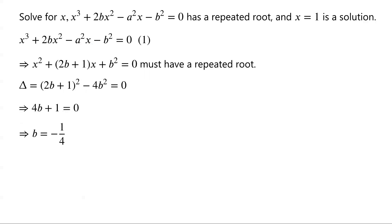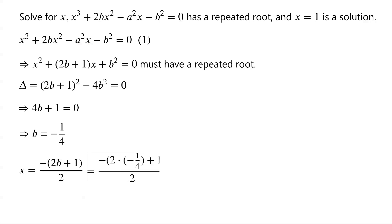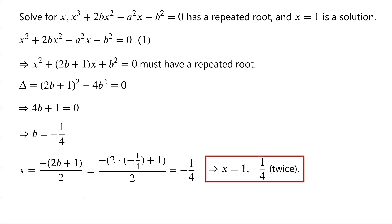So B equals negative 1 over 4. The repeated root X equals negative (2B plus 1) over 2, which equals negative (2 times negative 1 over 4 plus 1) over 2, which equals negative 1 over 4. So the given equation has three real roots: 1 and negative 1 over 4 (twice).